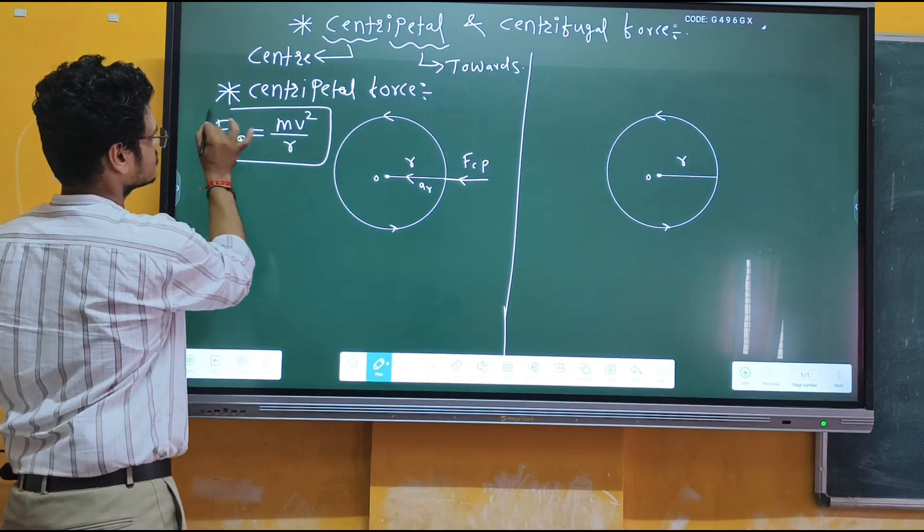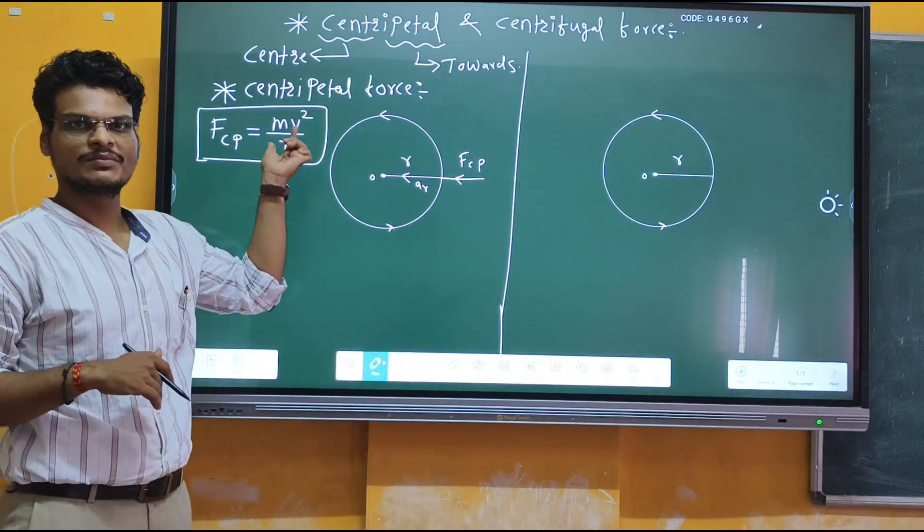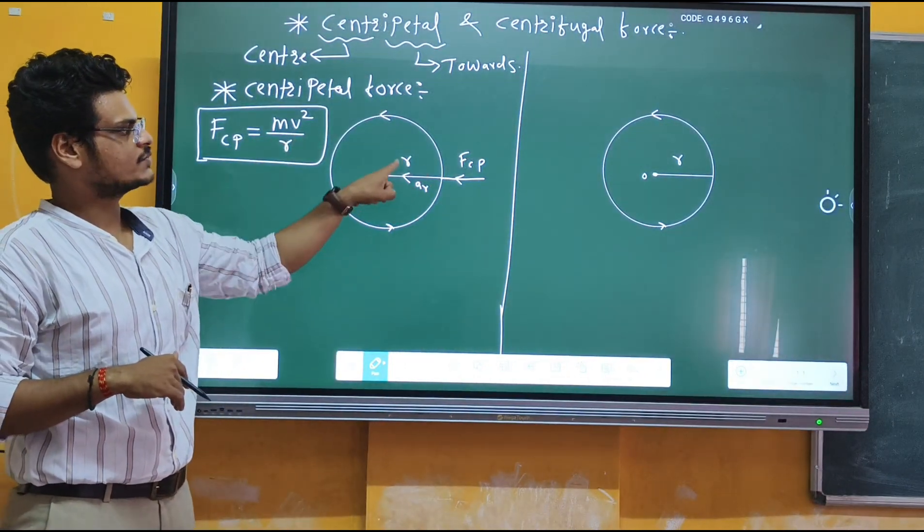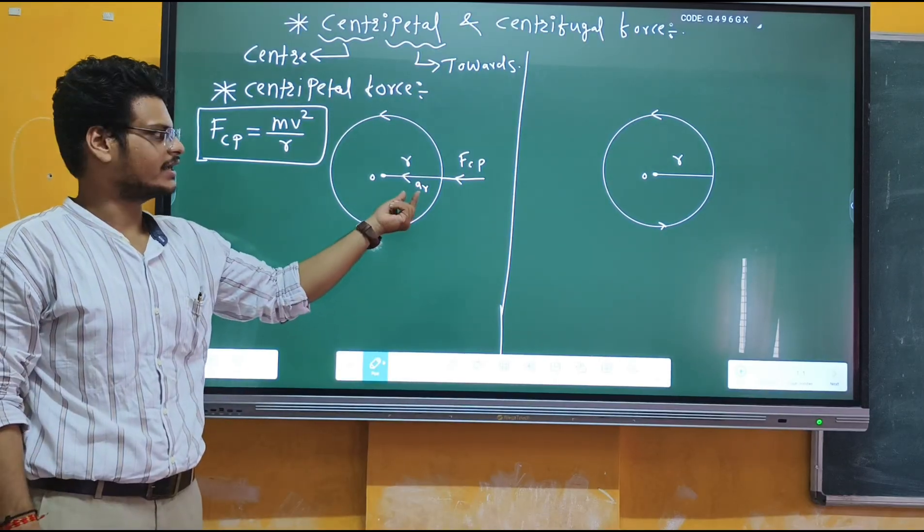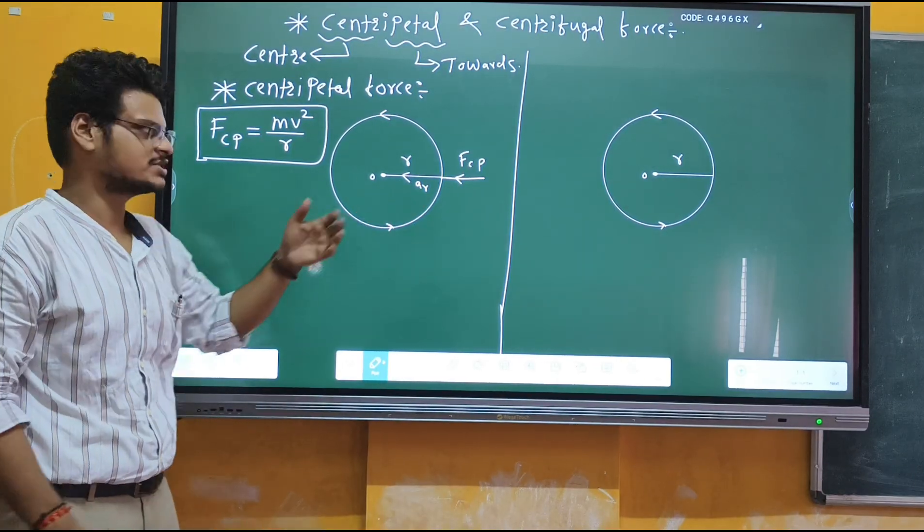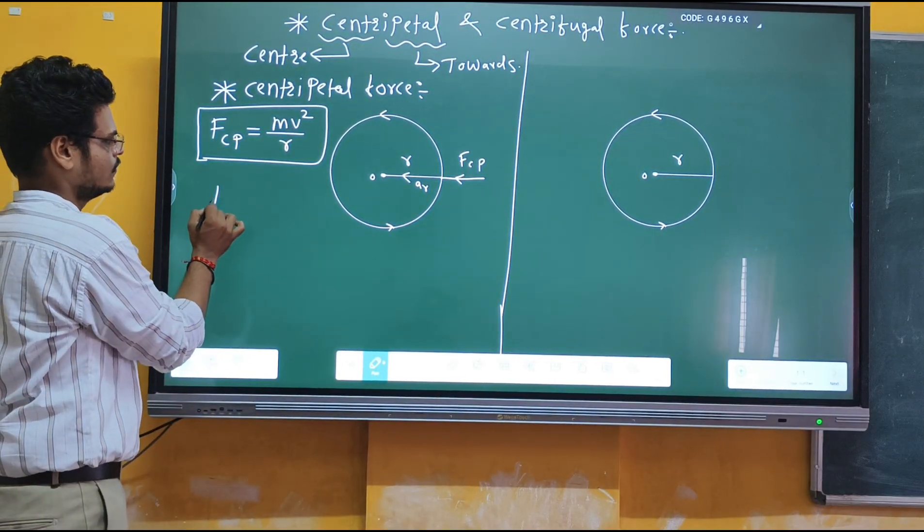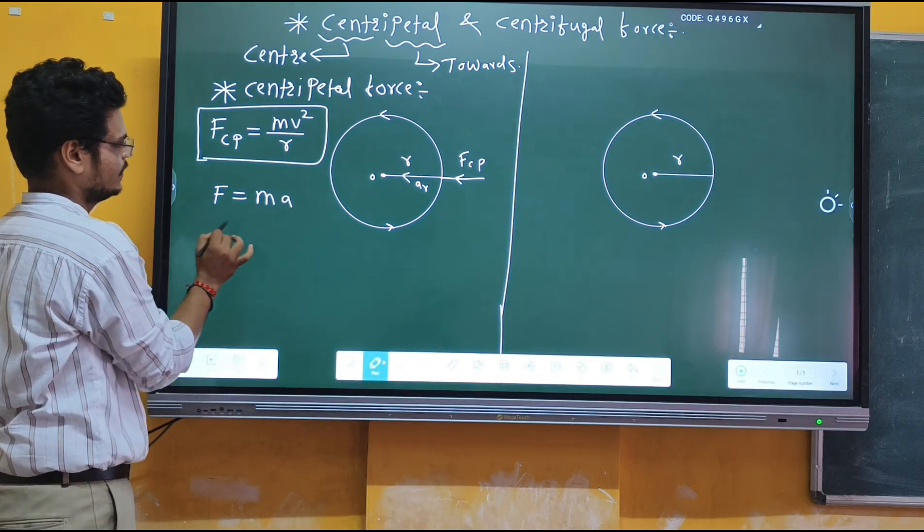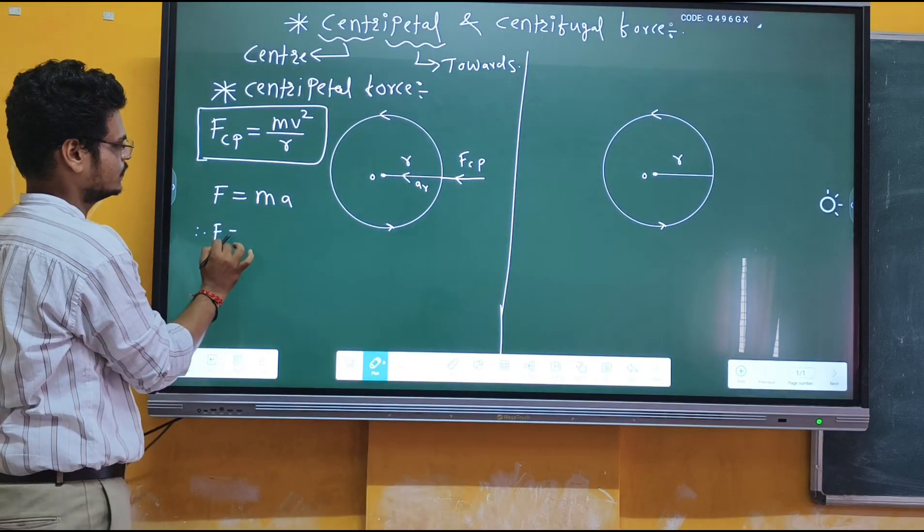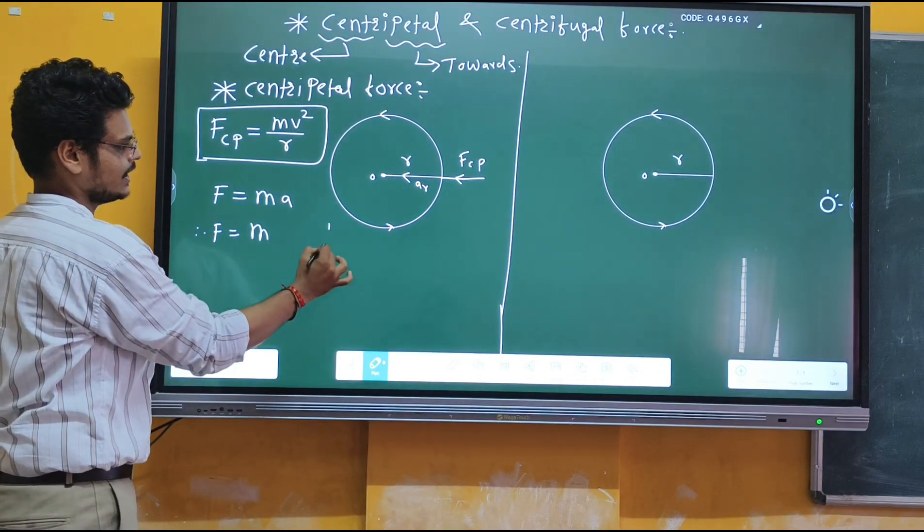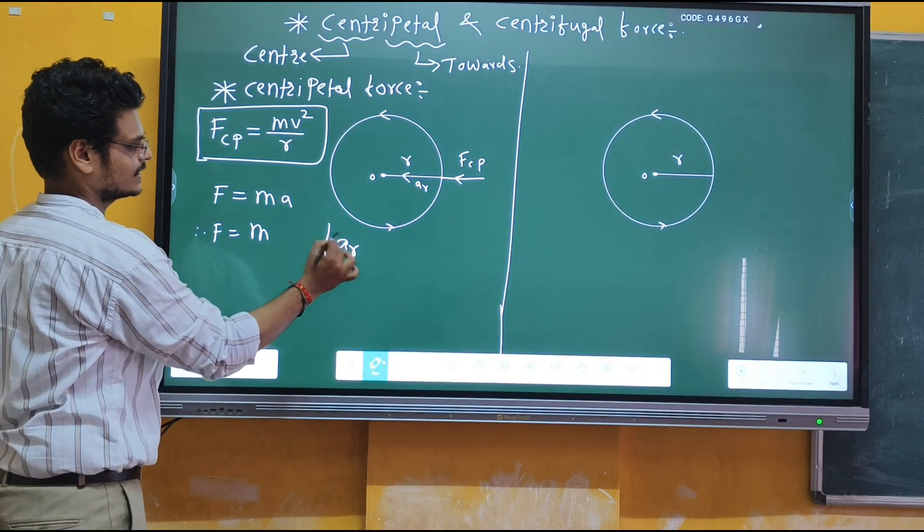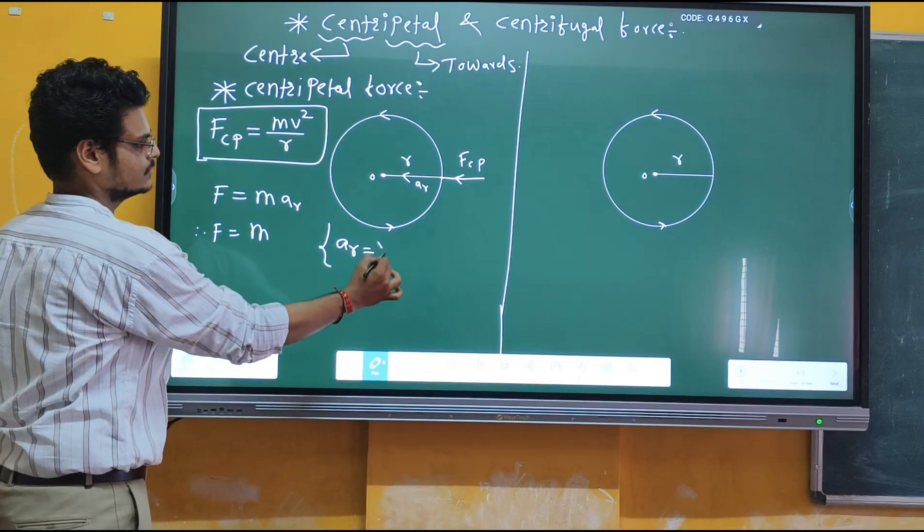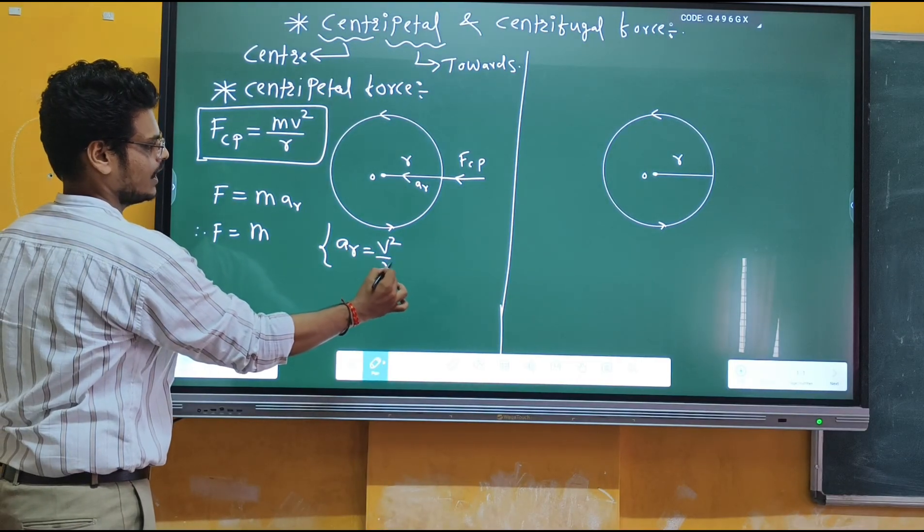You might be wondering what is meant by a_r. This is called radial acceleration. We know Newton's second law: F = ma. Therefore, F = m × a_r, where I replace acceleration with radial acceleration, which equals V²/R.